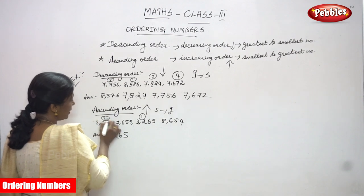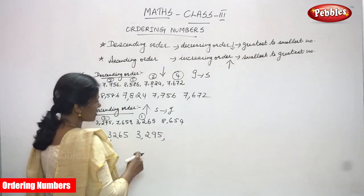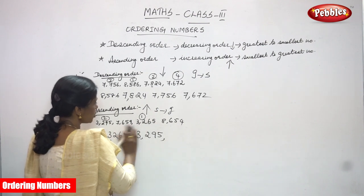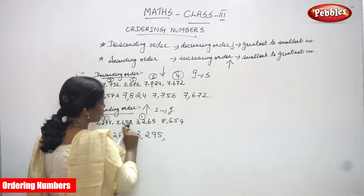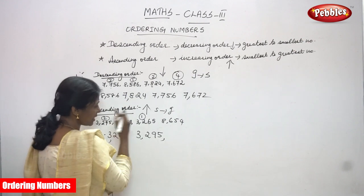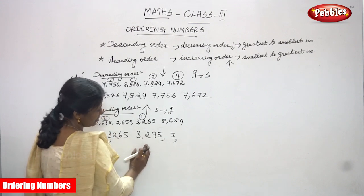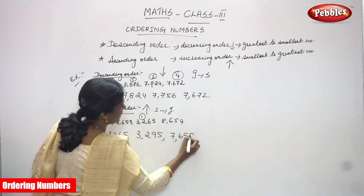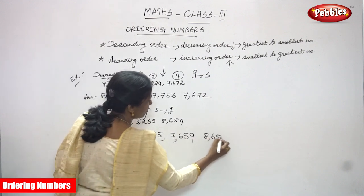So 3265 is written in first place. The second number is 3295, which is the next smallest. Now comparing the remaining two numbers — 7659 starts with 7000 and 8654 starts with 8000. Since 7000 is smaller than 8000, 7659 gets third place and 8654 is the greatest number, written last.